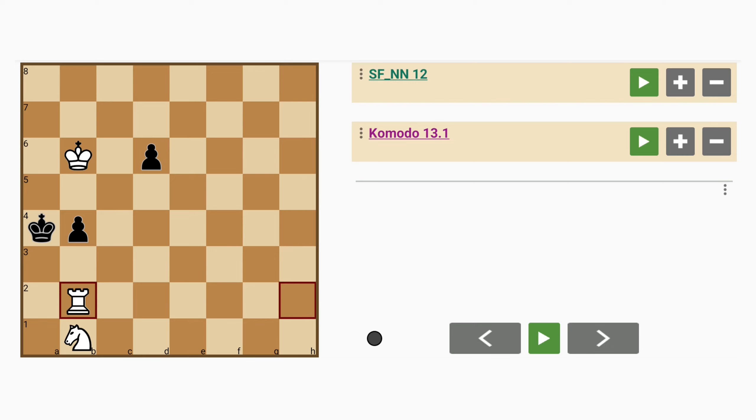How about rook to b2? Notice how the king can't move to a3 because of the knight on b1, so b3. That pawn is still defended by the king.